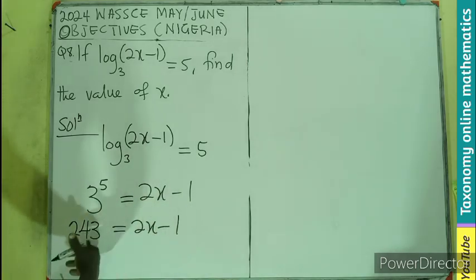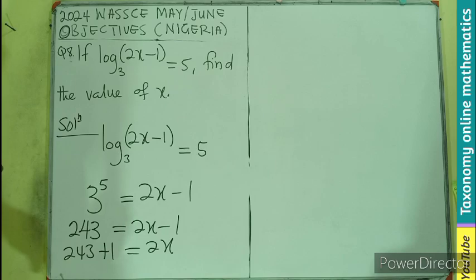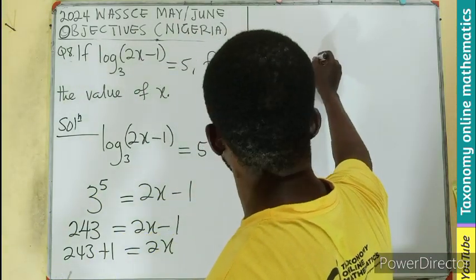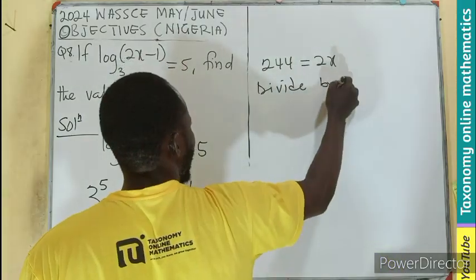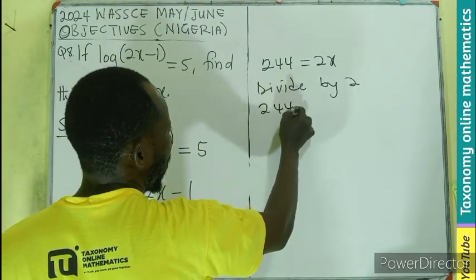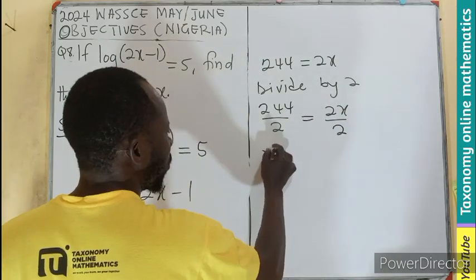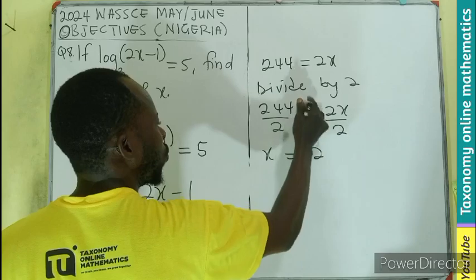We transpose this from the right to the left to become 243 plus 1 equals 2x. And I'm sure if we add that, we'll be having 244 equals 2x. Then we divide both sides by 2, which is the coefficient of the x. That means 244 divided by 2, 2x divided by 2. That means x equals 122.